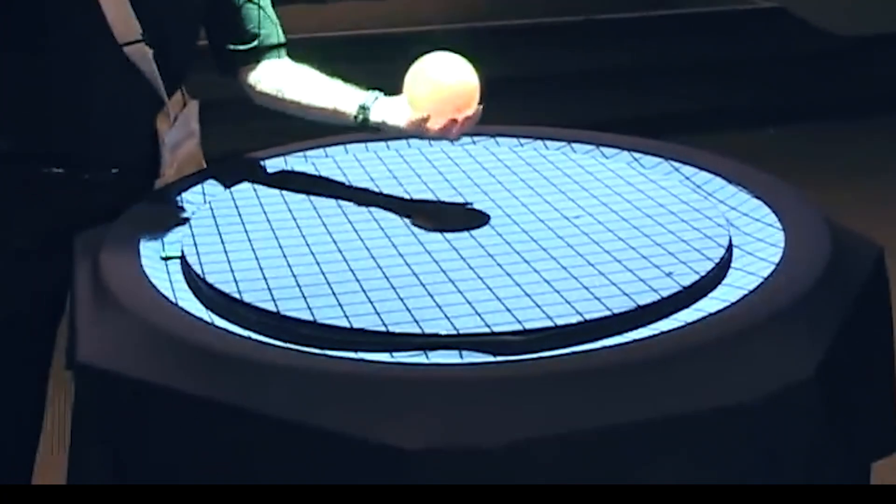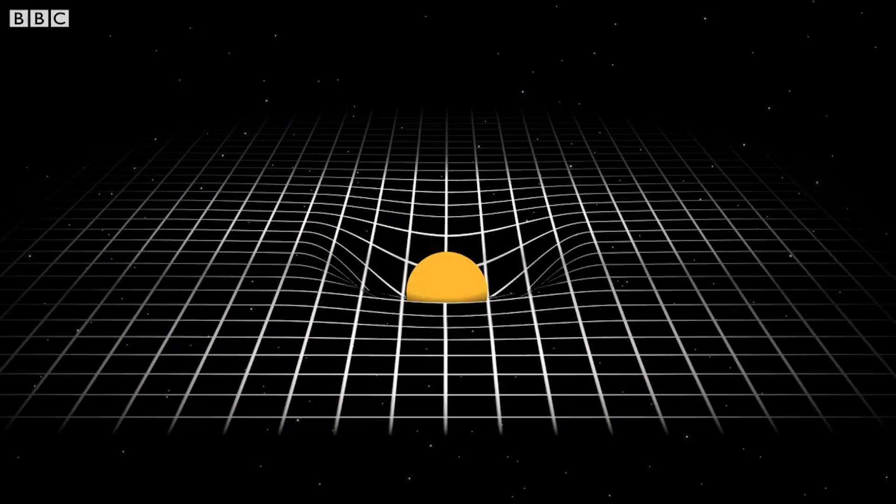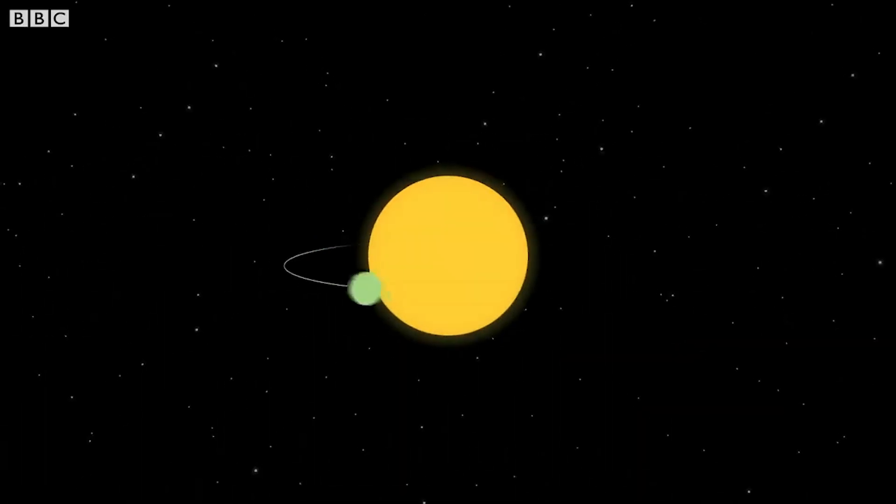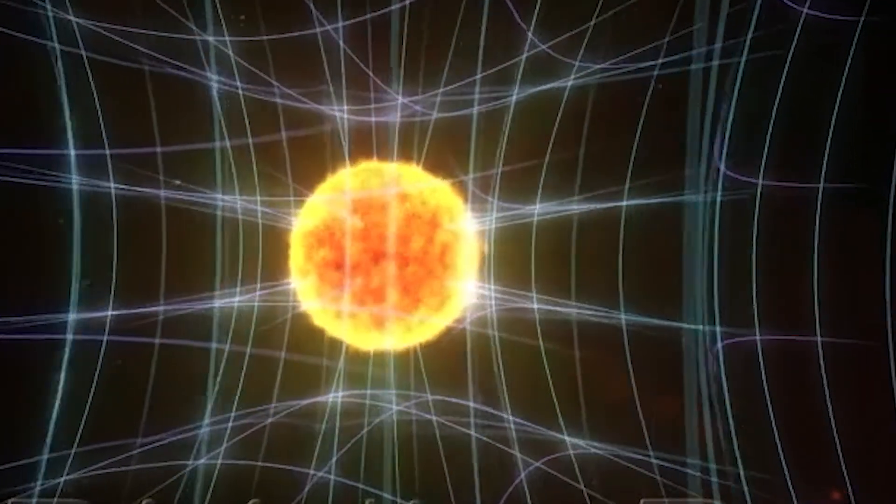Think about dropping a bowling ball right into the center of a trampoline. The bowling ball represents, let's say, the sun. And the trampoline's fabric represents space-time itself. Now, obviously, this example is two-dimensional and the real fabric of space is three-dimensional, but doing it this way makes it easier to digest.